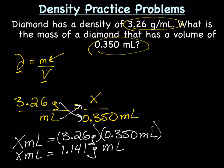What I did to get this number was multiply these two. Now what we need to do is get the x by itself, so I'm going to divide both sides by milliliters, leaving us with a mass of x equals 1.141 grams.